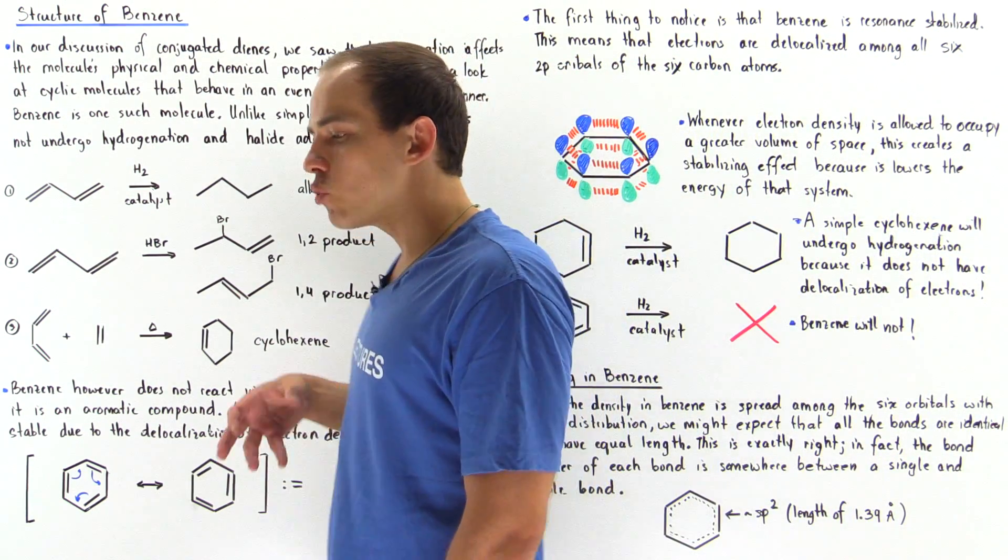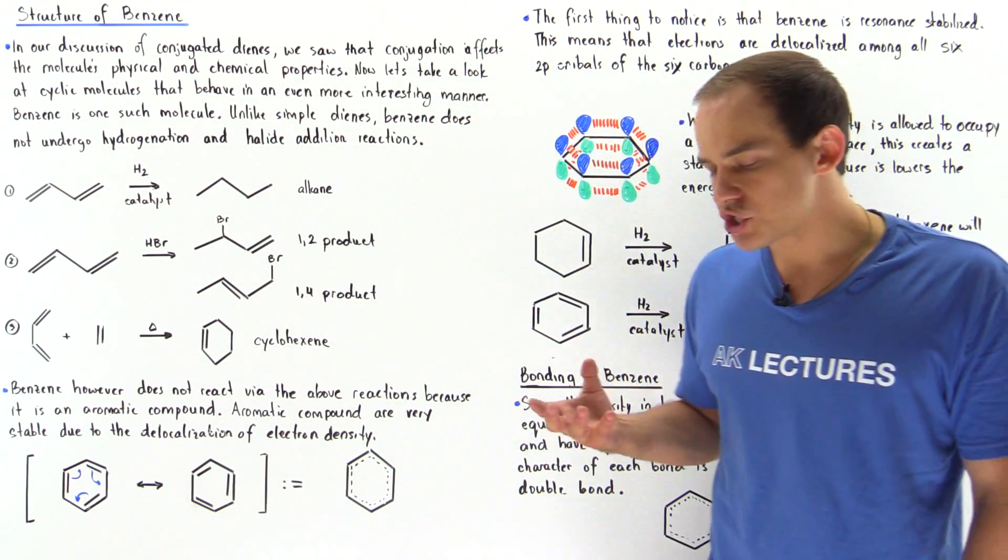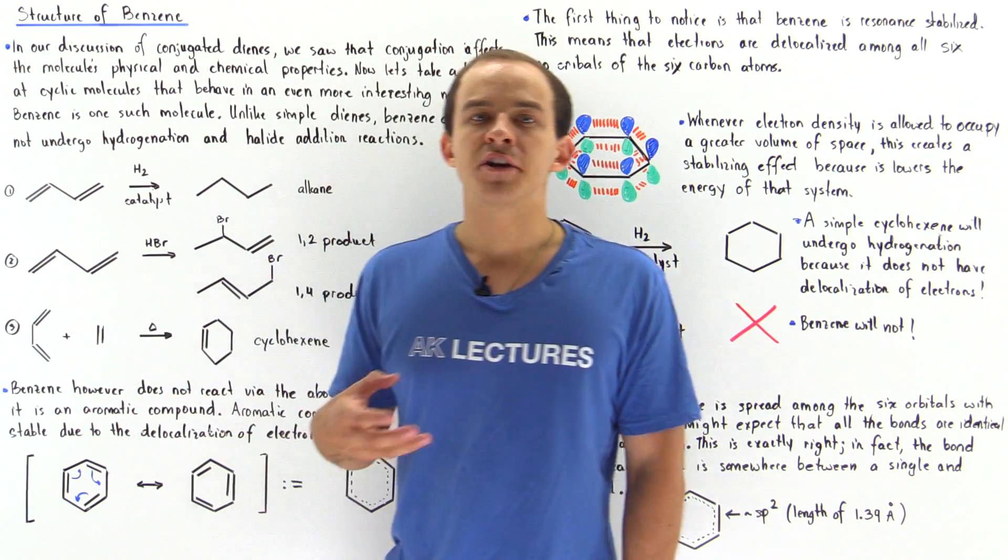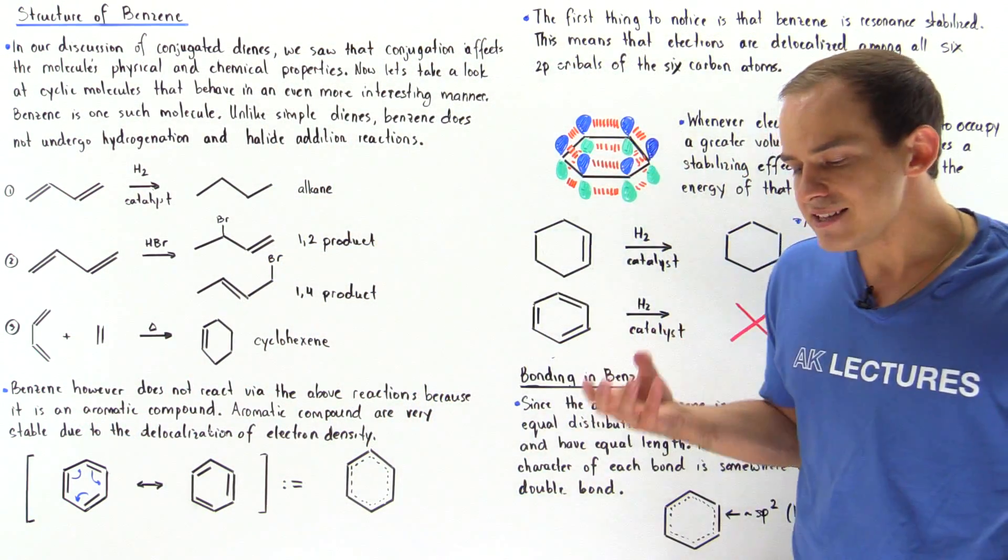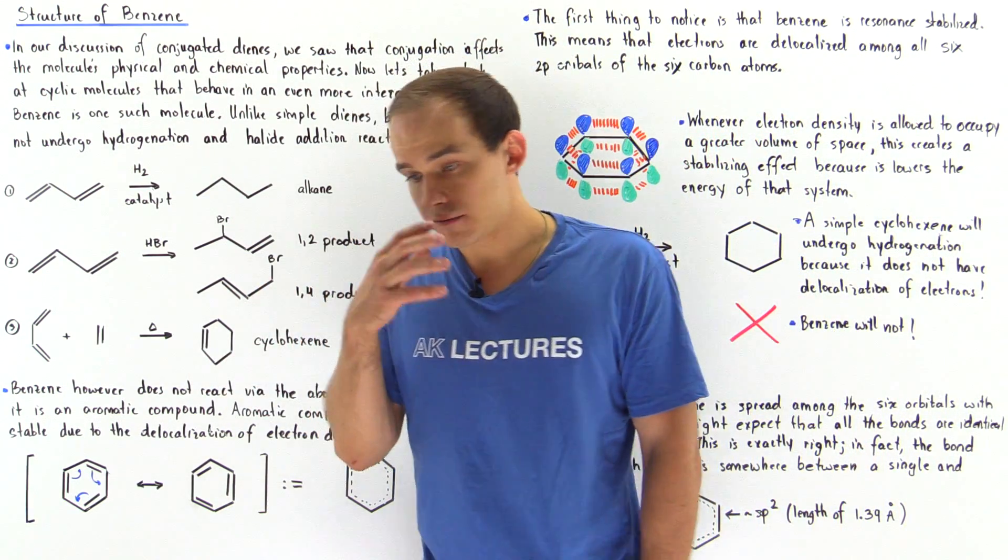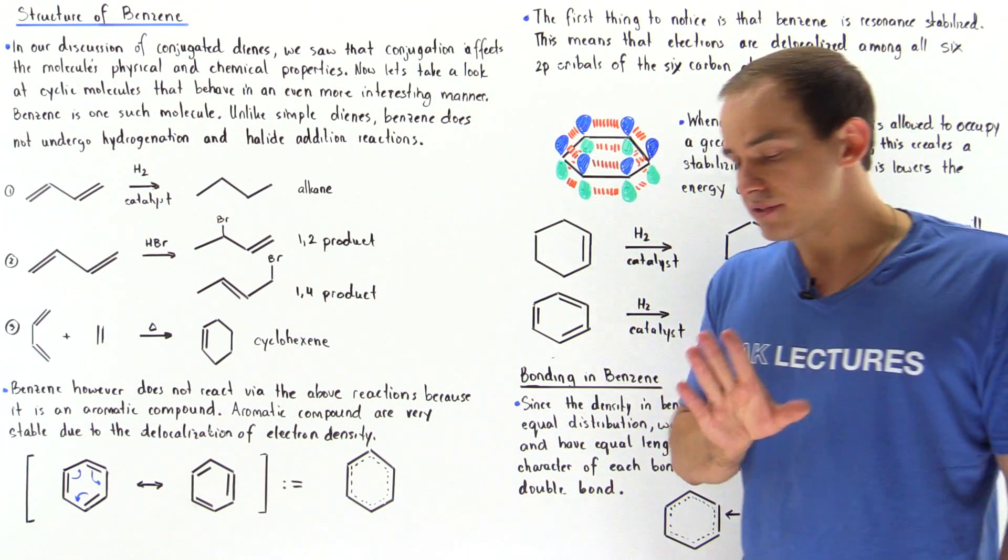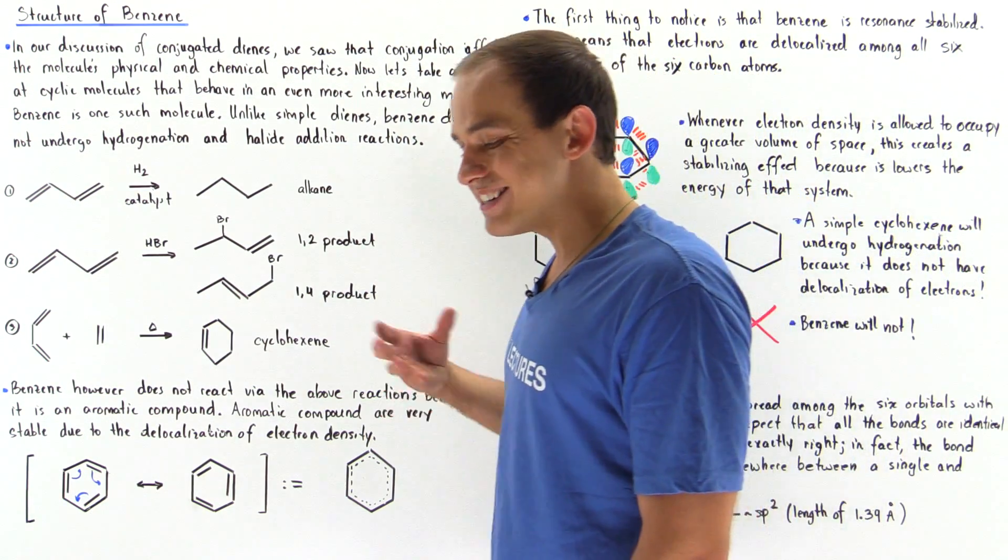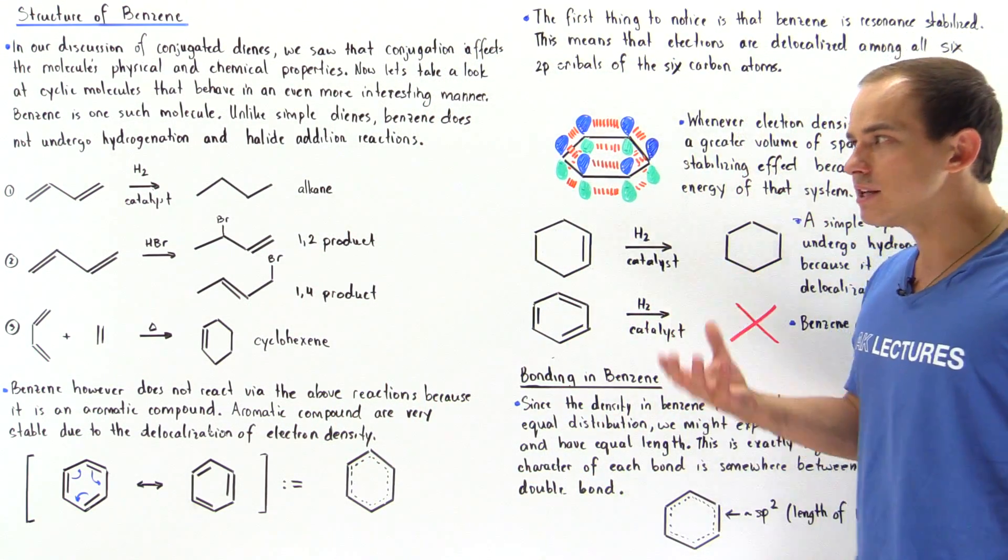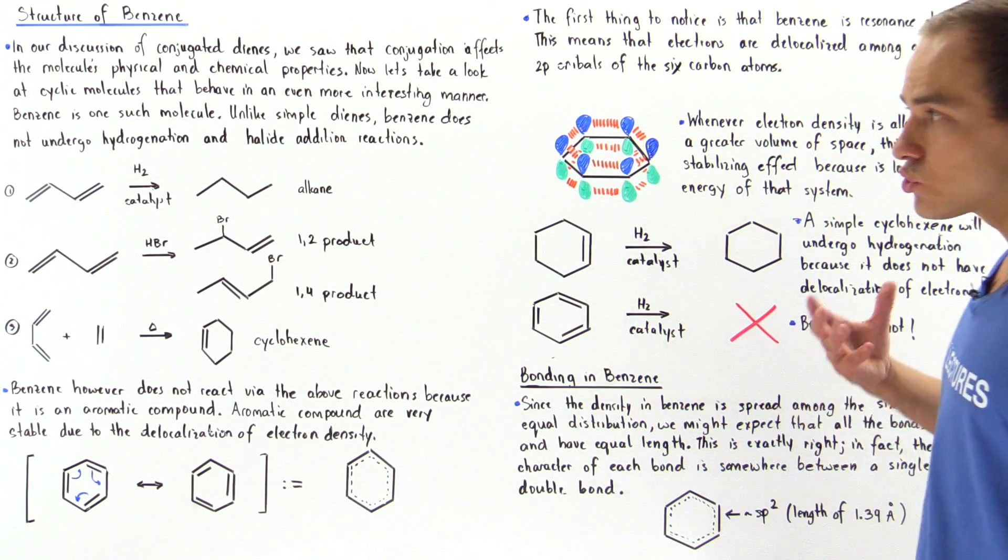Now in this lecture we're going to discuss an even more interesting type of molecule known as the benzene molecule. So benzene has a special type of conjugation and this basically places it into a new category of compounds known as aromatic compounds. So these are compounds that we're going to discuss in greater detail in a future lecture. In this lecture we're simply going to introduce the benzene molecule and discuss its reactivity as well as its structure.